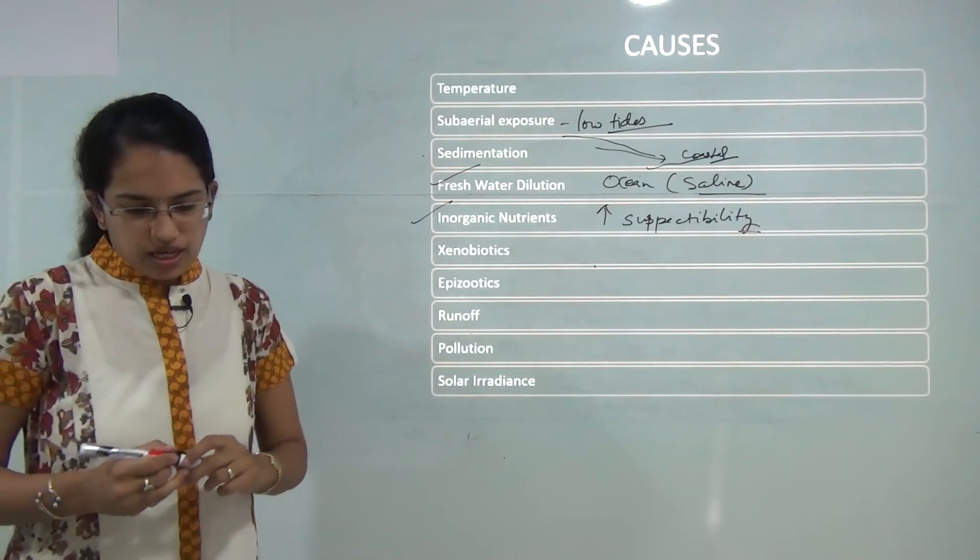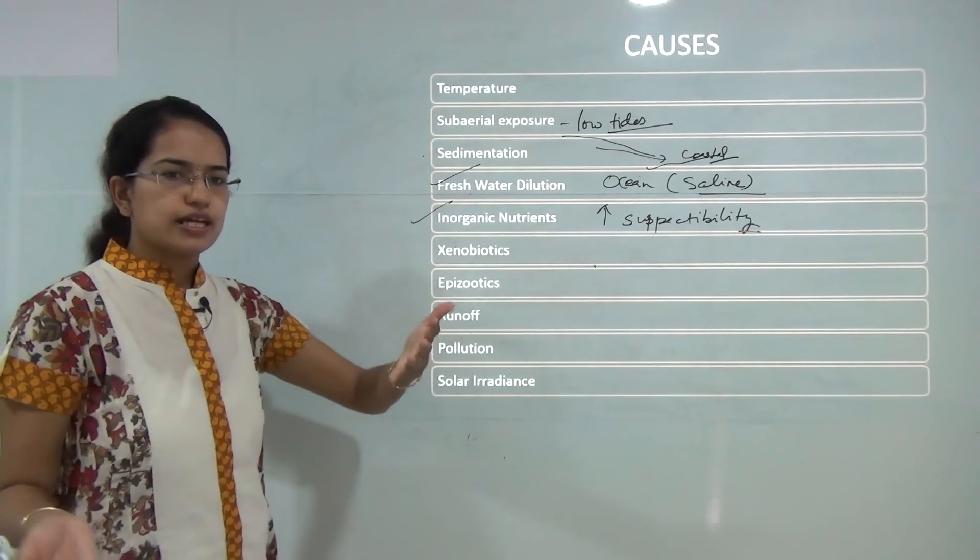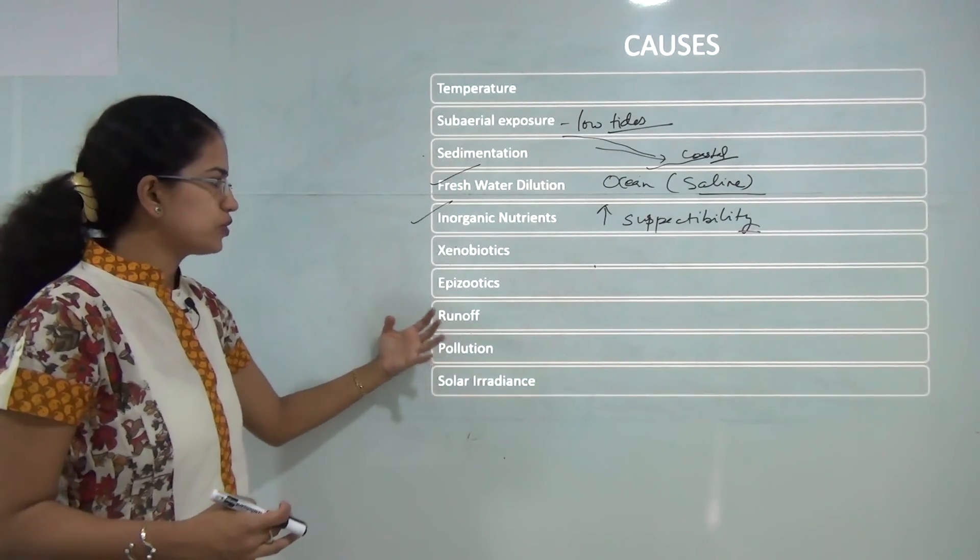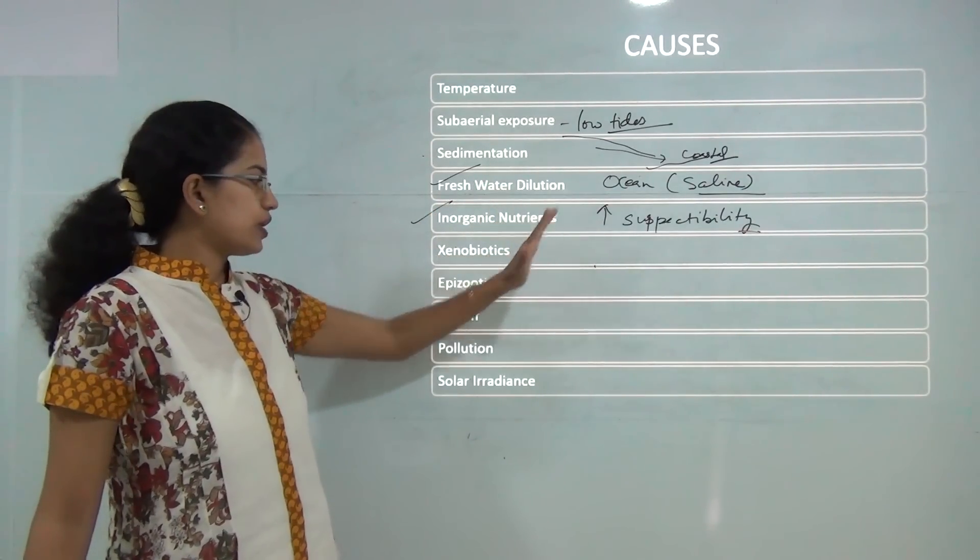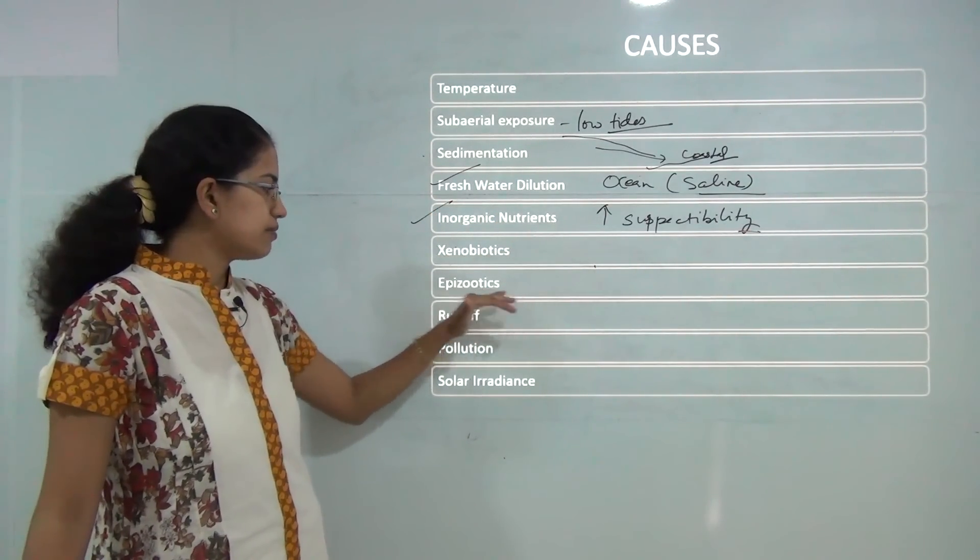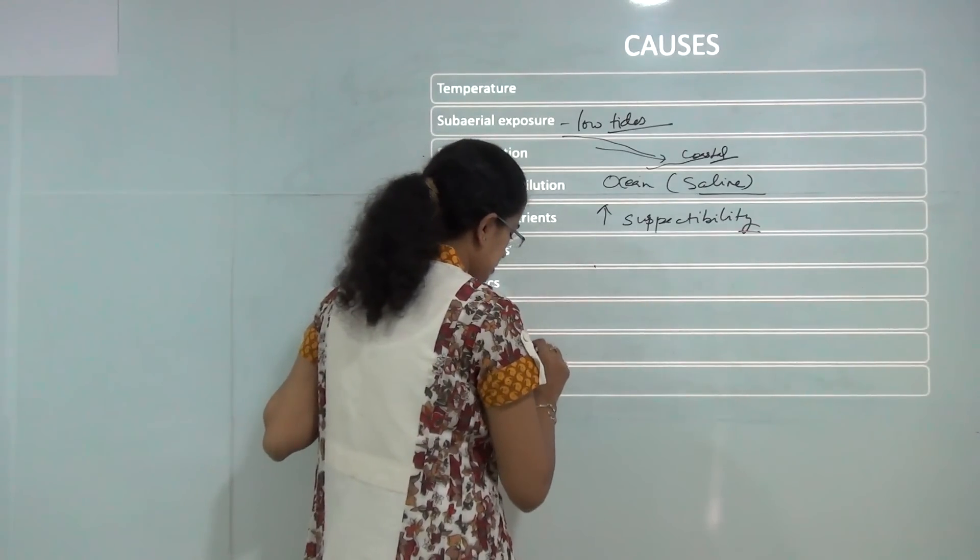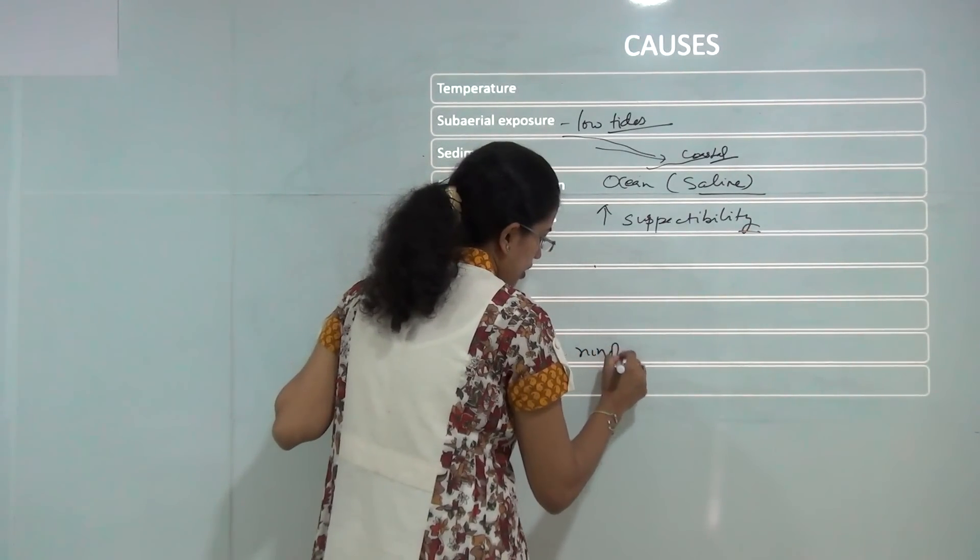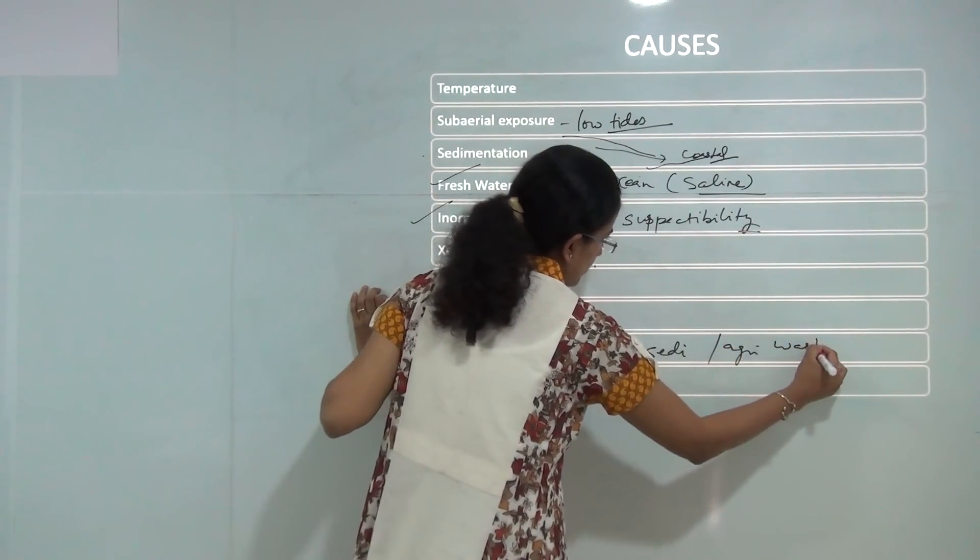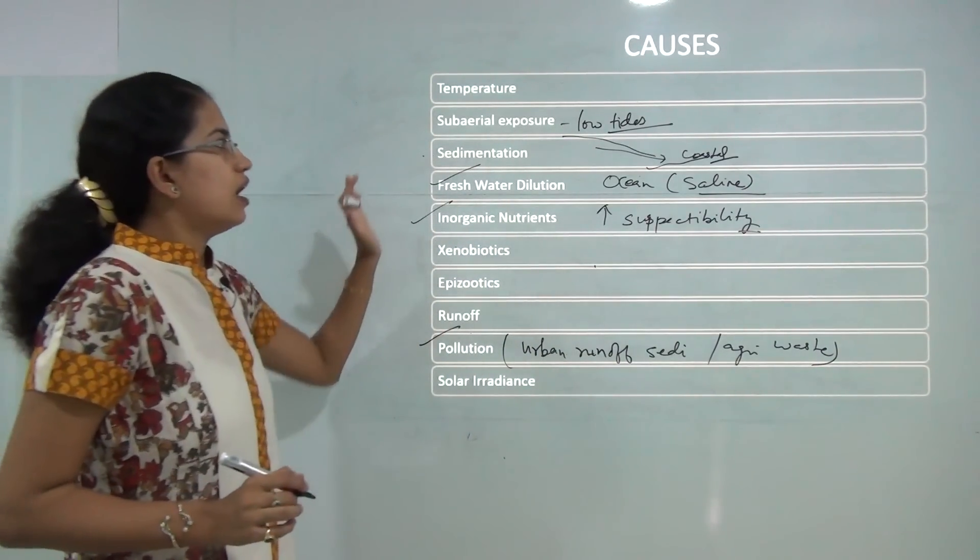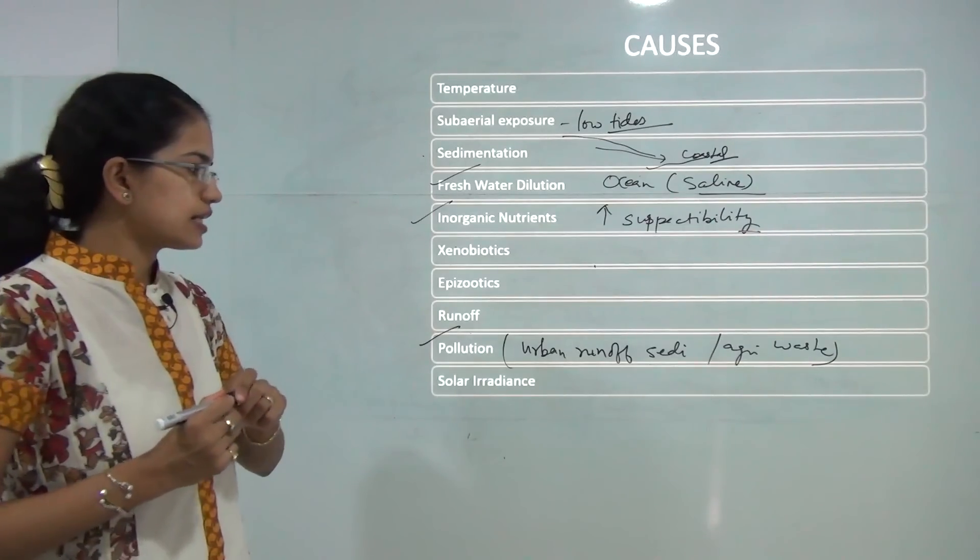Then you have xenobiotics. They are the creatures that kill zooxanthellae and once zooxanthellae is killed it would not be able to provide food to the coral. Then you have epizoids which again affect the coral bleaching. If there is a lot of runoff mainly from urban runoff or sedimentation or agricultural waste that is pouring into the ocean that would lead to the bleaching and finally solar irradiance or the amount of ultraviolet radiation that are coming up.